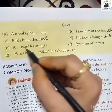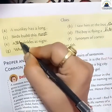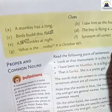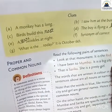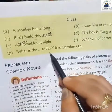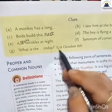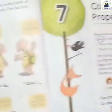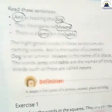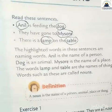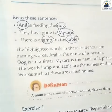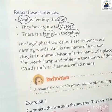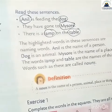Fifth clue: a dash twinkles at night — stars twinkle at night, so the answer is star. Sixth: correct — true. Seventh: what is the dash today — date (D-A-T-E). So all these clues on page 33 are filled in: T-A-I-L tail, S-T-O-P stop, N-E-S-T nest, K-I-T-E kite, S-T-A-R star, T-R-U-E true, D-A-T-E date.